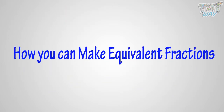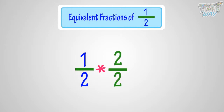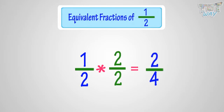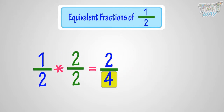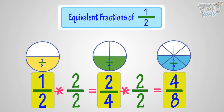Now let's learn how you can make equivalent fractions. Let's make equivalent fractions of one by two. You have to multiply both the numerator and denominator with the same number — it can be two, three, four, or just any number. Here we multiply both the numerator and denominator of one by two with two, and we will get two by four, which is the equivalent fraction of one by two. Multiplying again by two, we get four by eight, which is the equivalent fraction of two by four. One by two, two by four, and four by eight are all representing the same portion of the whole, so they are equivalent fractions.